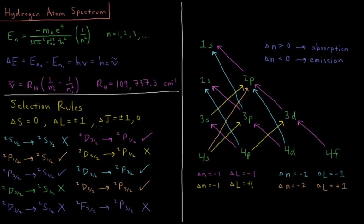And our final criteria is that delta J, the change in the total angular momentum quantum number, is either going to be zero or plus or minus one. So let's see, based off these various states, what we can and cannot transfer to.